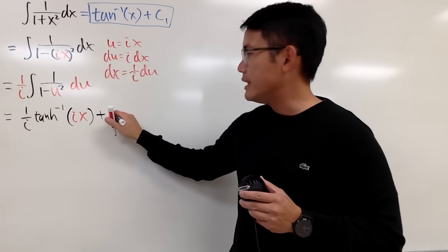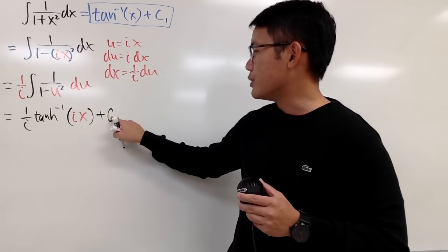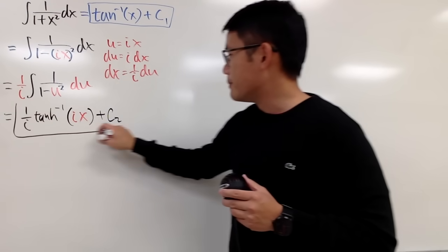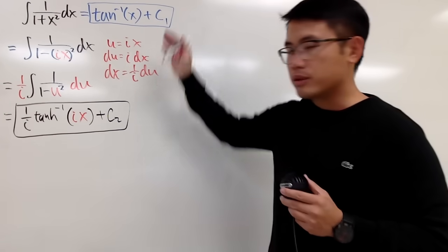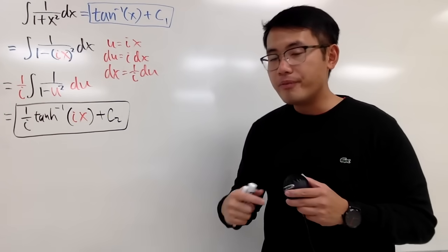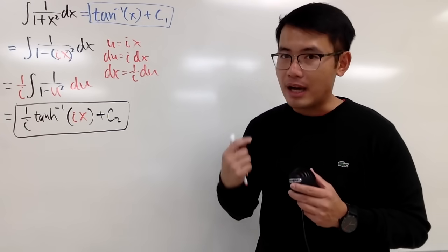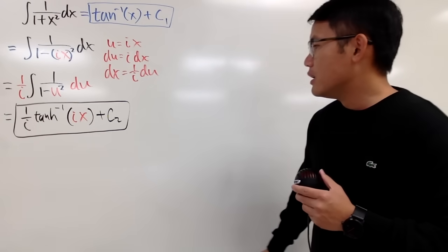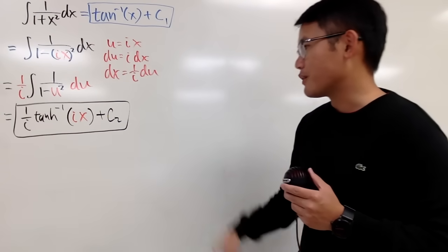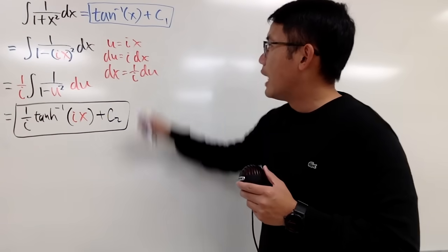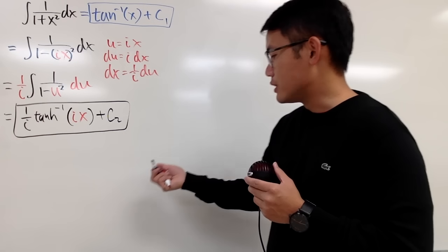So I will put down plus c2 because this is the second result. And now you have to remember, when you work on an integral and then maybe you end up with two different looking results, they are equal, but they are off by a constant. So you just have to figure out what the constant is.